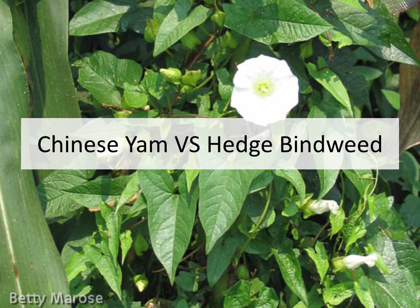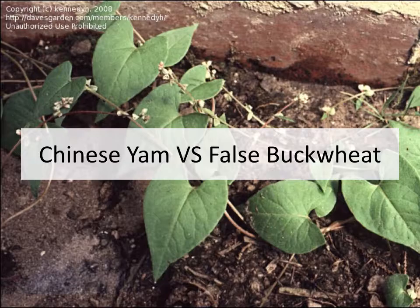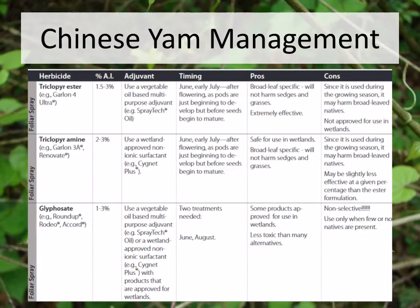Wild potato and native morning glories have heart- to arrow-shaped leaves with veins from a central mid-vein instead of parallel veins; the flowers are large and showy, and again no air potatoes. The bindweed family has a similar shaped leaf but also with a central mid-vein, large showy flowers, and no air potatoes. The last lookalike, false buckwheat, has more arrow-shaped leaves with a central mid-vein, very small fruits, and no air potatoes.